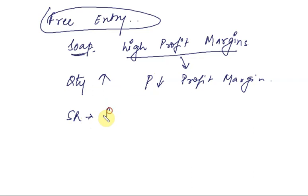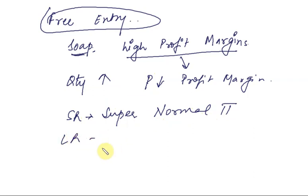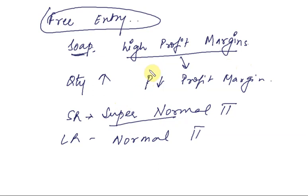In monopolistic competition, in the short run there can be super normal profit. But in the long run, there will always only be normal profit. Why? Because if there is super normal profit — high profit margins — new firms will enter. New firms entering means quantity increases, price falls, and automatically the monopolistic firm will earn only normal profit.